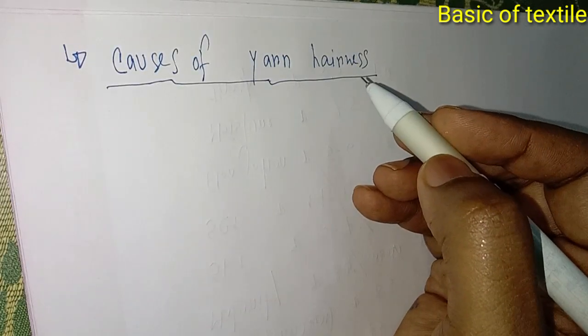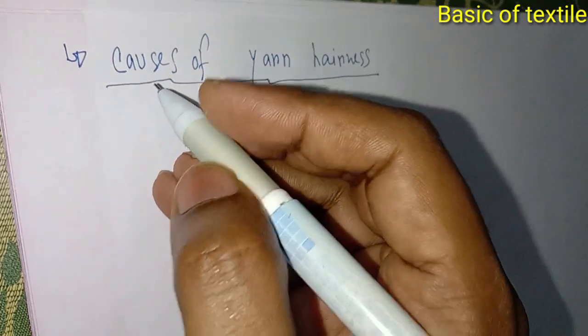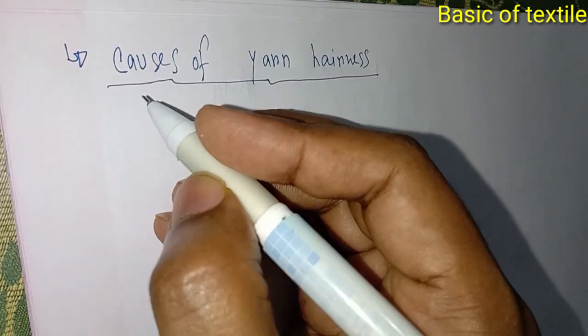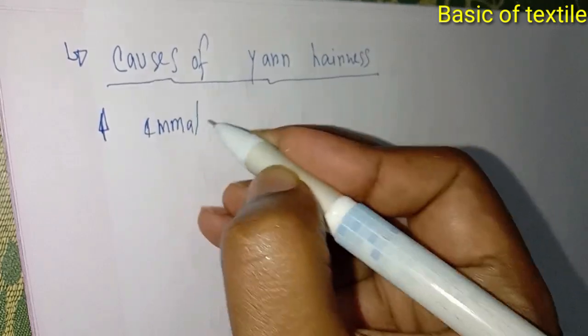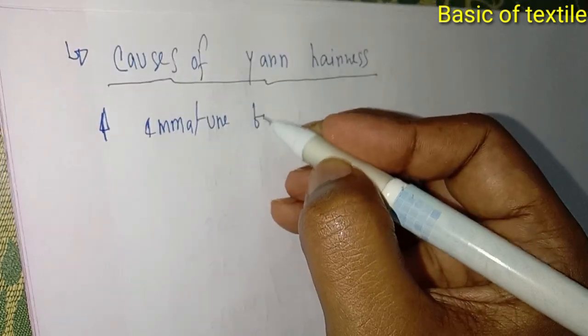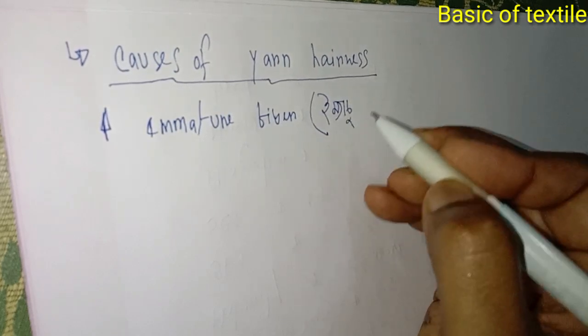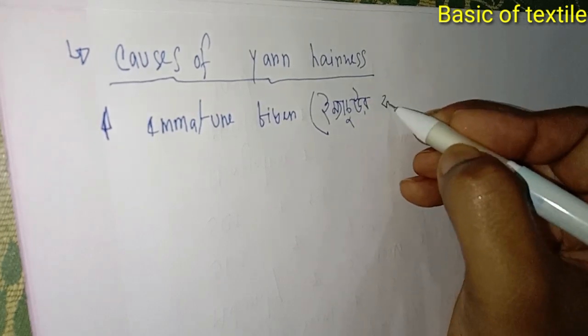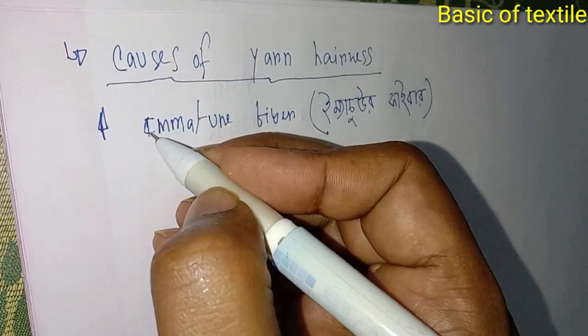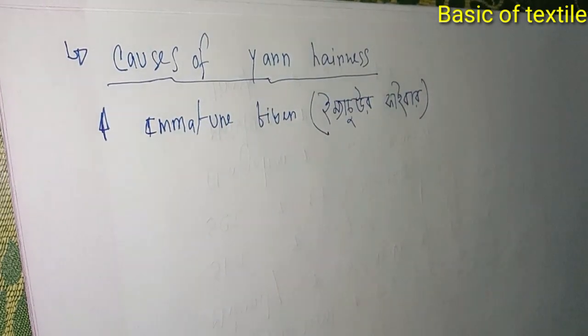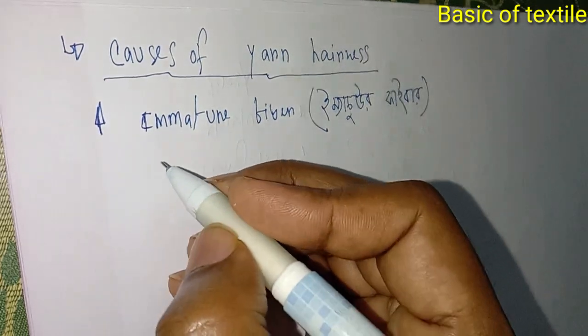The first cause is immature fiber. If the fiber is below operable quality or immature, it will contribute to yarn hairiness.